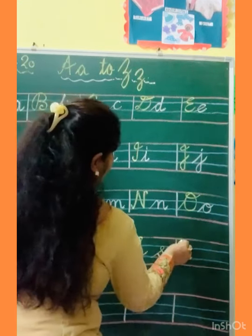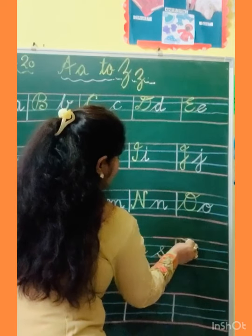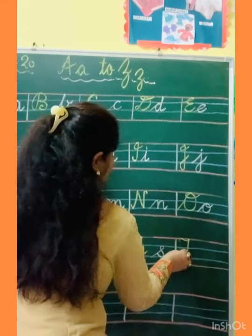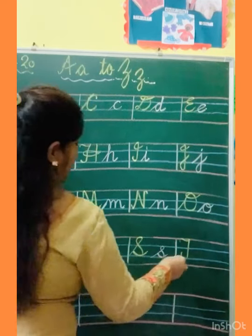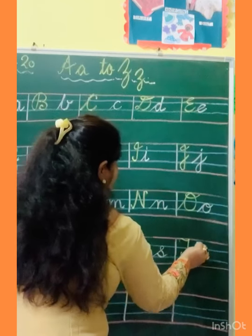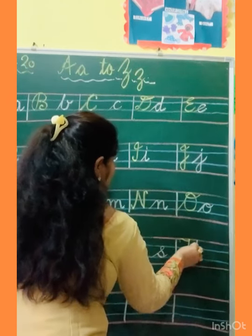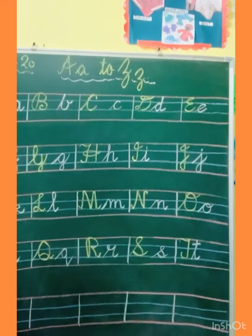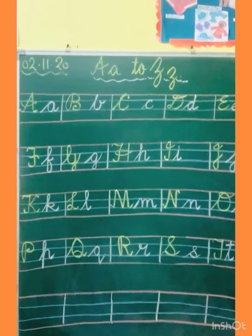Now T. How to make capital T? Small slanting, turn, standing line, touch the line, and go up. This is capital T. And small T: slanting line, come down, standing line, kick, and cut the T.